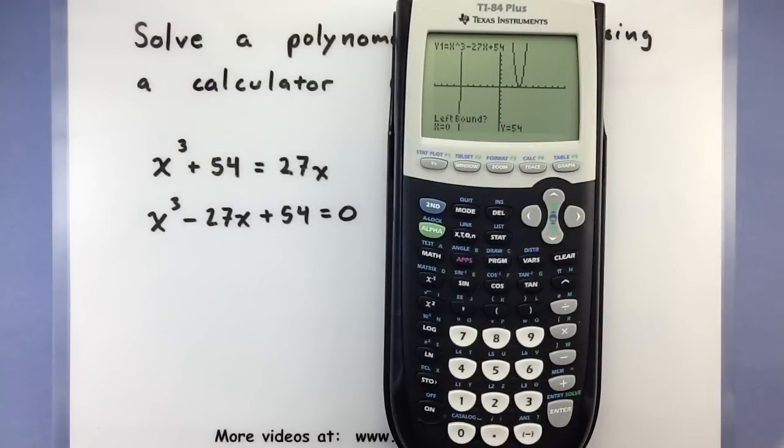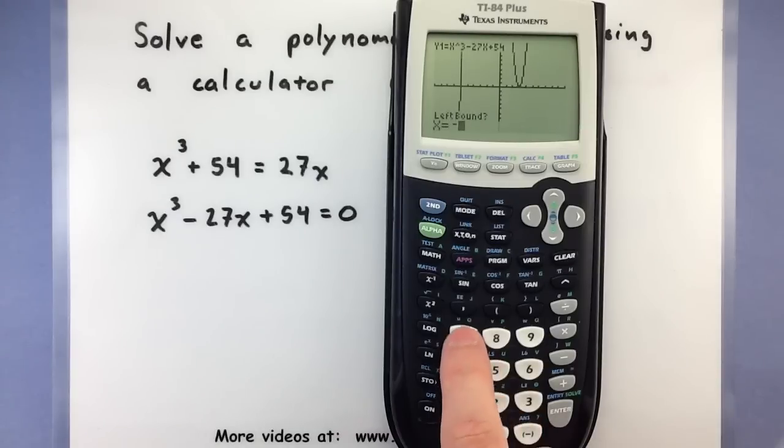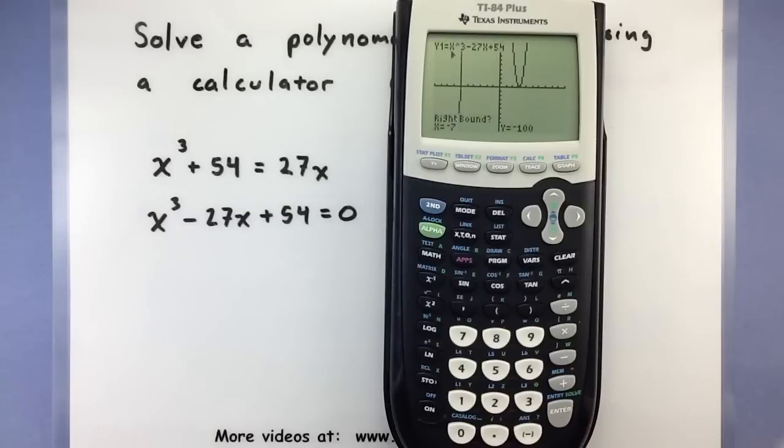So for my left bound, I'll choose something less than negative 6. So I'm just going to type in negative 7, enter. And then I want something on the right side of that, so let's type in something like negative 3. That's definitely on the right side.